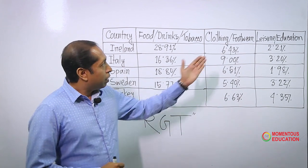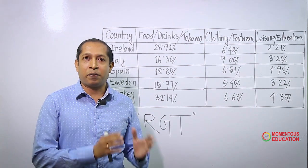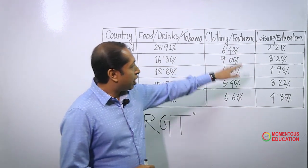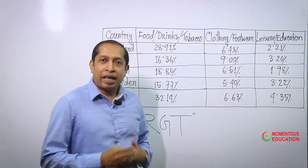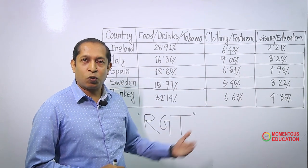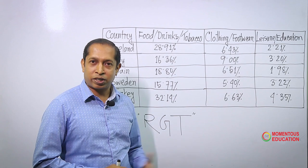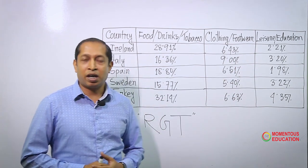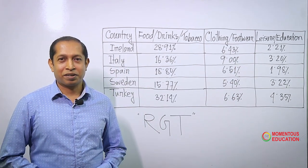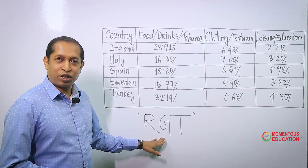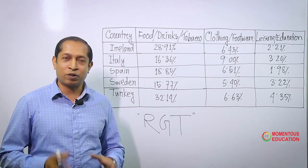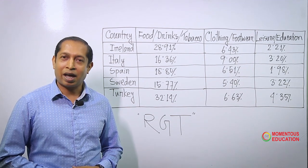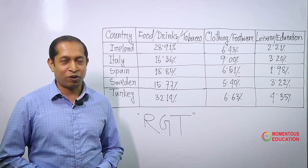Again, when we go to leisure and education category, we use compare connectors again — that means side by side. In this category, grouping shows everyone is quite similar — not much interested — and spending on this item is less, ranging from 2 to 5 percent. So, viewers, by using this RGT formula, you can make a very good summary in a very short time that will fulfill the requirement of Writing Task 1 and it will be very helpful to get a very good score.